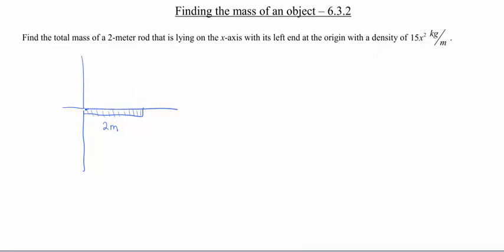Let's go ahead and draw in our function so we can imagine what that density must be looking like. So here is our density function, 15x². If we were to take a chunk of this rod, it would have a density kind of in the middle here. If we were to take something over to the left side, it would obviously have a smaller mass because it's got a smaller density than it would over here at the right side.